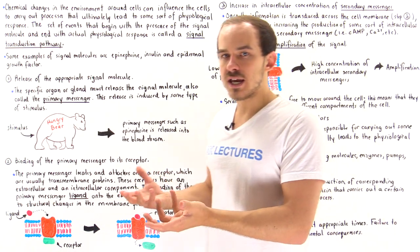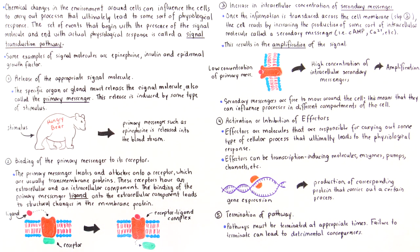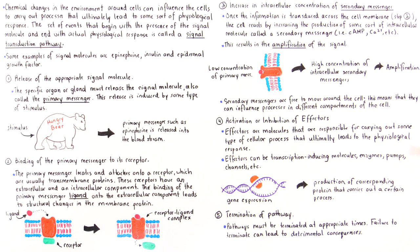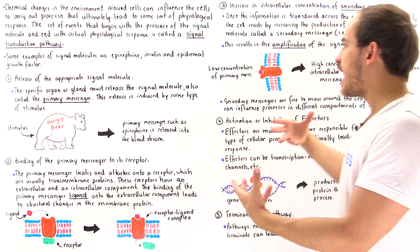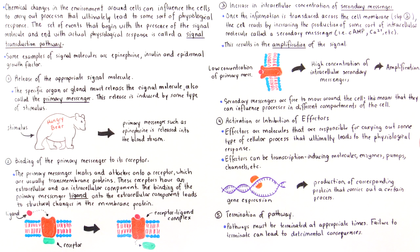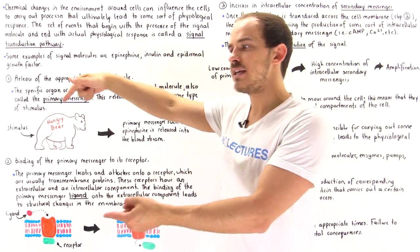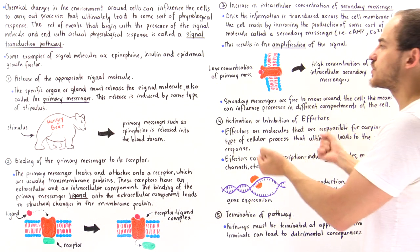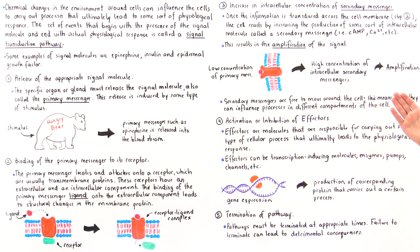Once secondary messengers are produced, they can easily diffuse across the cell, entering organelles such as the nucleus or the mitochondria. Secondary messengers are free to move around the cell, which means they can influence processes within different compartments. Two secondary messengers can go to different places in the cell and influence different processes, further amplifying the effect of the original signal.